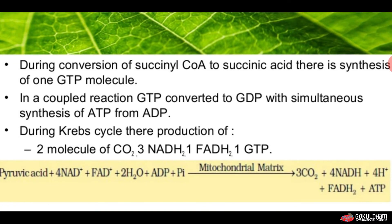During the conversion of succinyl coenzyme A to succinic acid, there is synthesis of one GTP molecule. So when succinyl coenzyme A is converted into succinic acid, it produces one GTP molecule.